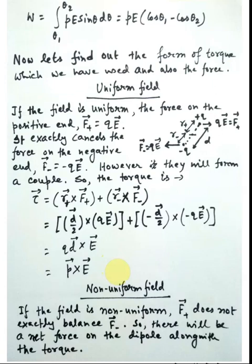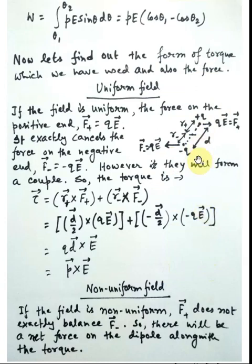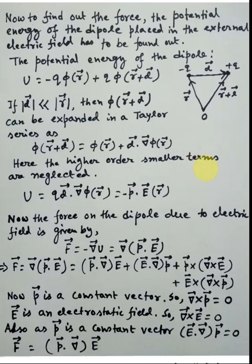If we place the dipole in a non-uniform field, the force F₊ on the positive charge does not exactly balance F₋ on the negative charge, so these two forces will not exactly cancel. There will be a net force on the dipole along with the torque. To find out this force, we need to determine the potential energy of the dipole placed in the external electric field.